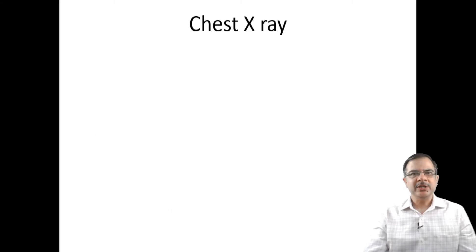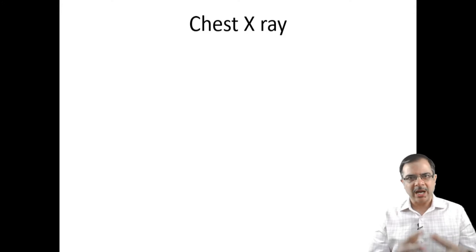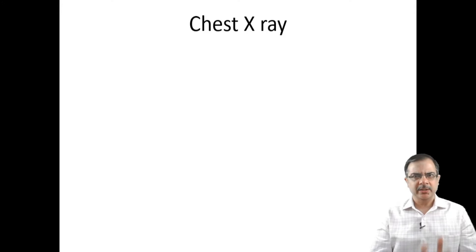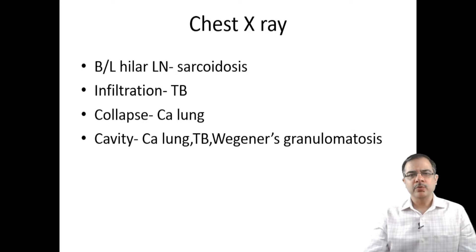An important investigation is the chest X-ray. After physical examination and detailed clinical history, chest X-ray should be advised for all patients with chronic cough. Bilateral hilar lymphadenopathy suggests sarcoidosis. Infiltration suggests tuberculosis. Collapse is seen in CA lung. Cavities can also be a feature of CA lung or Wegener's granulomatosis. An interstitial pattern is seen in interstitial lung diseases.